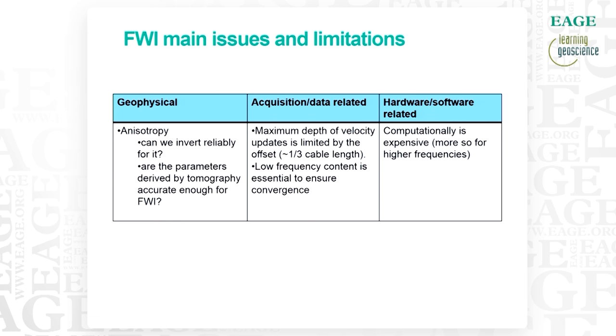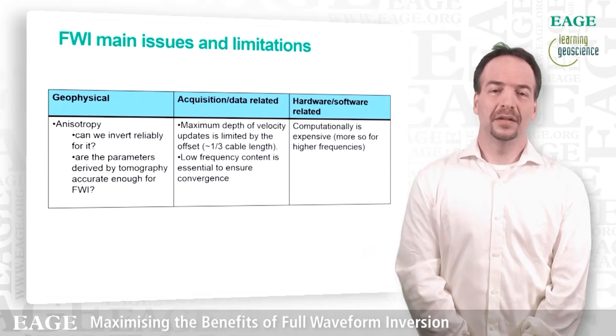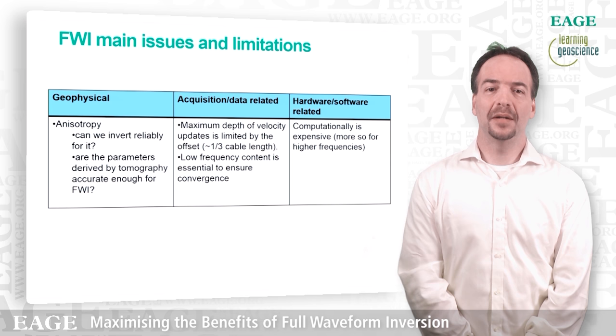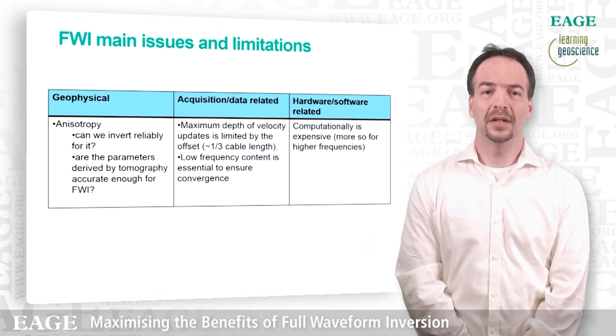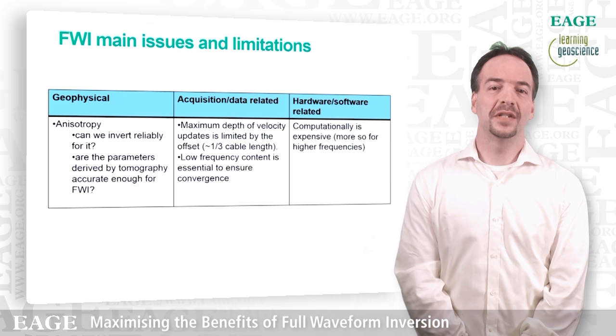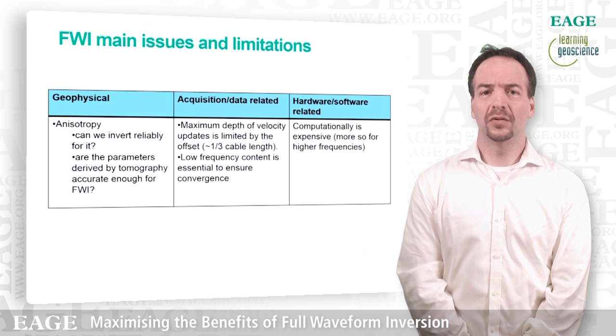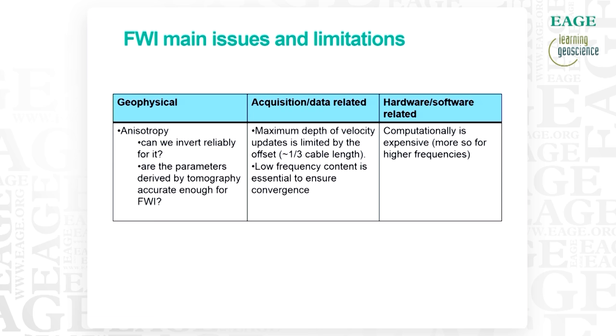On the data side, the long offset is a must. Because we are limited to inverting diving waves at this point in time, our depth of investigation is about one-third of the cable length. So with 95% of our data being narrow-azimuth streamer with a streamer length of about 6 to 8 km, we realize that sometimes we cannot go down to our target depth. The low-frequency content is essential to assure convergence as I showed before. From a computational point of view, FWI is expensive and more so when we go to higher frequency — in fact, the cost of computation goes on the fourth power of the frequency.